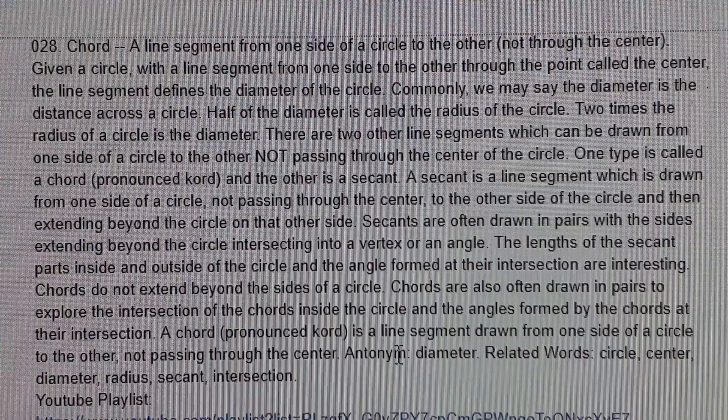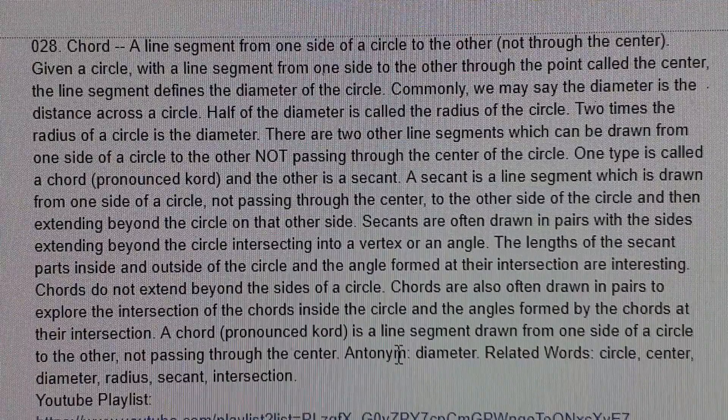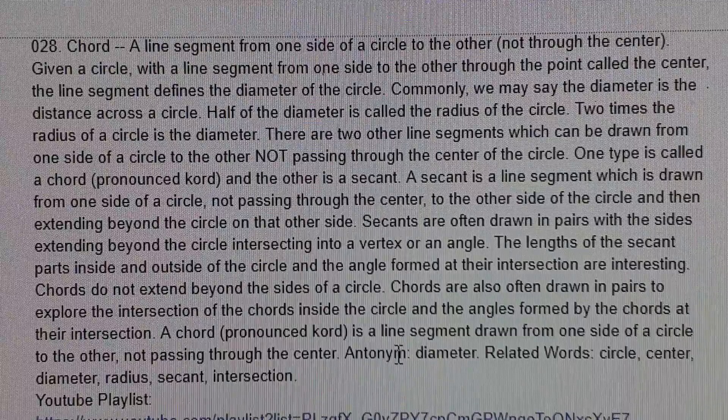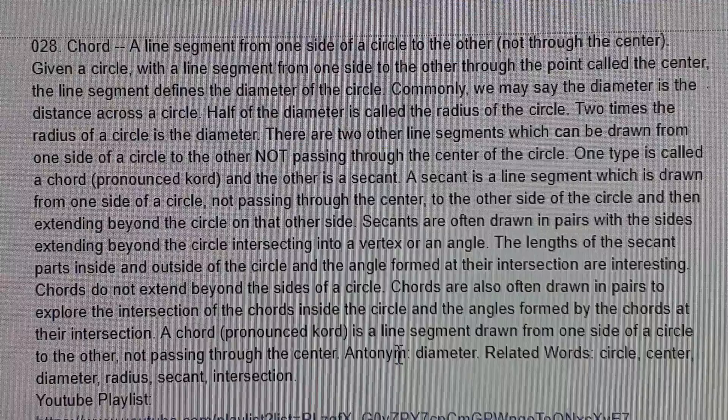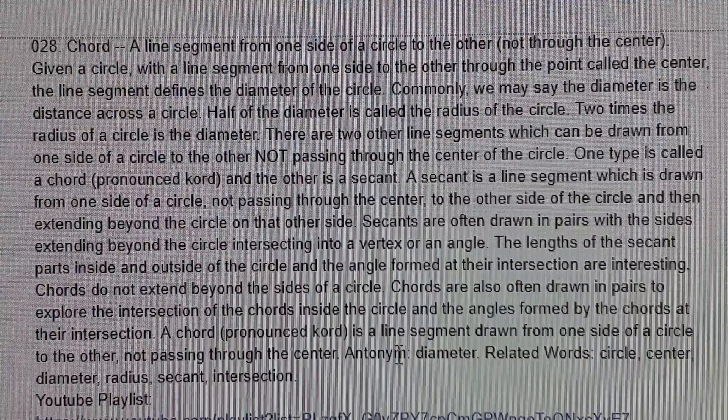Commonly, we may say the diameter is the distance across a circle. Half of the diameter is called the radius of the circle. Two times the radius of a circle is the diameter.